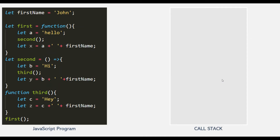Here we have a sample JavaScript program, and we are going to use this program to understand how a JavaScript program gets executed by the browser. So let's say this JavaScript code has just finished compiling — the code is now ready to be executed. First of all, a GlobalExecutionContext will be created in the call stack. And in this execution context, all the top-level code — that is, the code which is not inside any function — will be stored and executed.